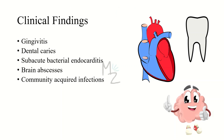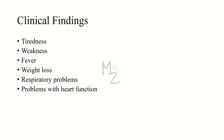Clinical findings: Streptococcus viridans is responsible for causing gingivitis, dental caries, subacute bacterial endocarditis, brain abscesses, and community-acquired infections. Symptoms include tiredness, weakness, fever, malaise, weight loss, respiratory problems like sinusitis, and problems with heart function.